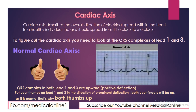To find out the Cardiac Axis from an ECG strip, it is very important to look at Lead 1 and Lead 3. To make it further easy, there is the Rule of Thumbs. You will put your left thumb on Lead 1 and right thumb on Lead 3, each in the direction of the prominent deflection.